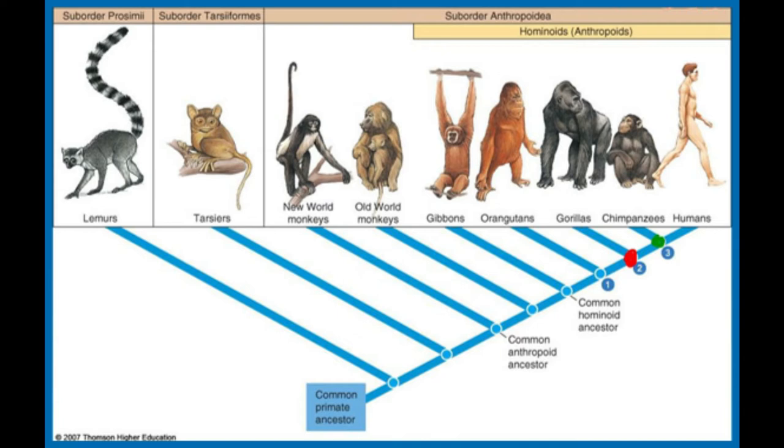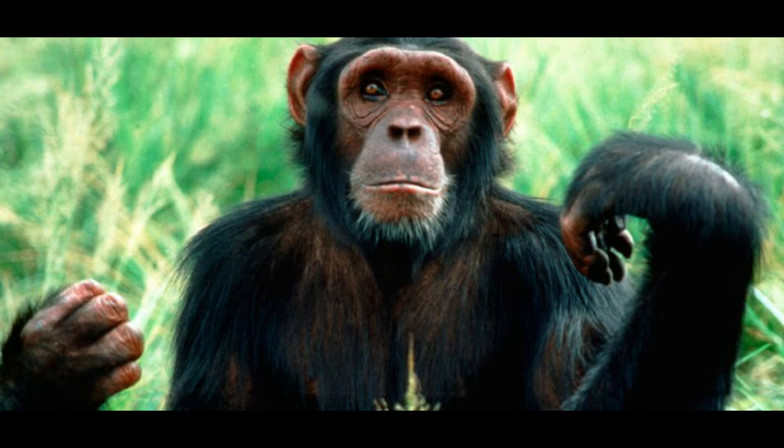Los catarrinos se dividen en las superfamilias cercopitecoidea o monos del viejo mundo y hominoidea u hominoideos. Los hominoideos incluyen a los humanos y a nuestros parientes más próximos, los simios superiores e inferiores. Para George Simpson, cuya taxonomía fue bien aceptada por décadas, humanos y simios se diferencian en el nivel de familia, es decir, hominidae y pongidae, ubicando a los australopitesinos entre los póngidos. Esta forma de dividir a los homínidos obliga a poner a todos los simios superiores y sus antepasados, directos y colaterales, en una misma familia, poniendo a los humanos en otra familia.